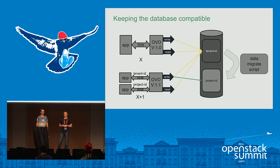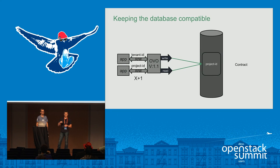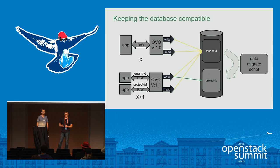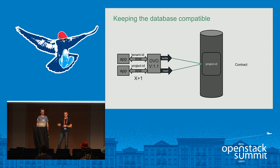You need some kind of migration script running in the background, and when all the data is migrated you can drop the old column. This is tricky because you lose your X-1 compatibility, so you cannot be compatible with the older version at all times using only the OVO versioned object approach. You also need to switch the data access layer — the read and write operations — from the old tenant_id column to the new project_id column when applying the contract scripts to remove the older column.